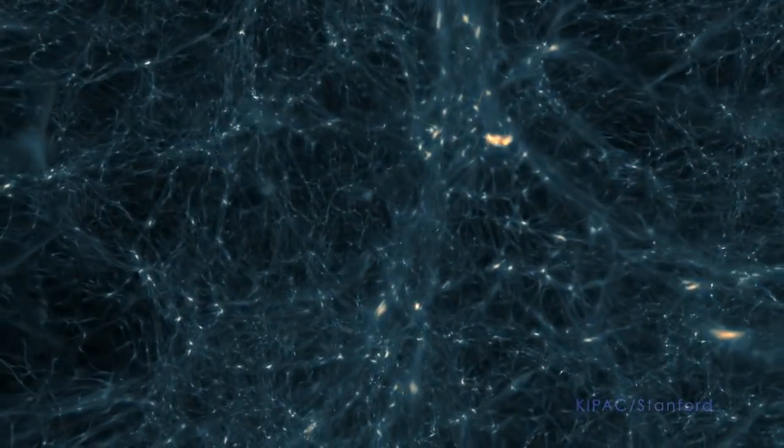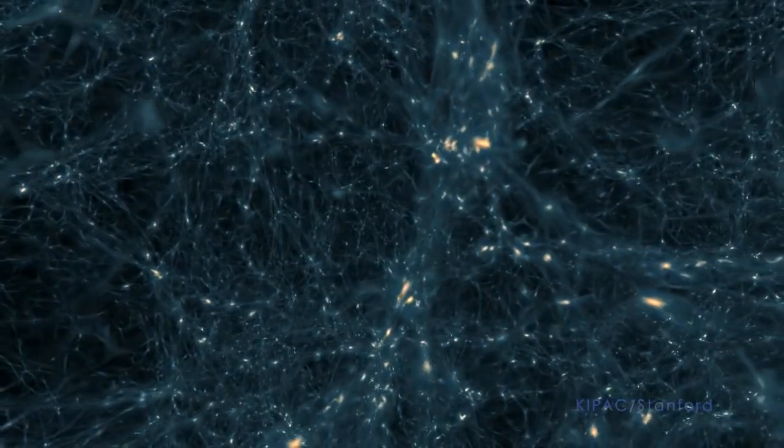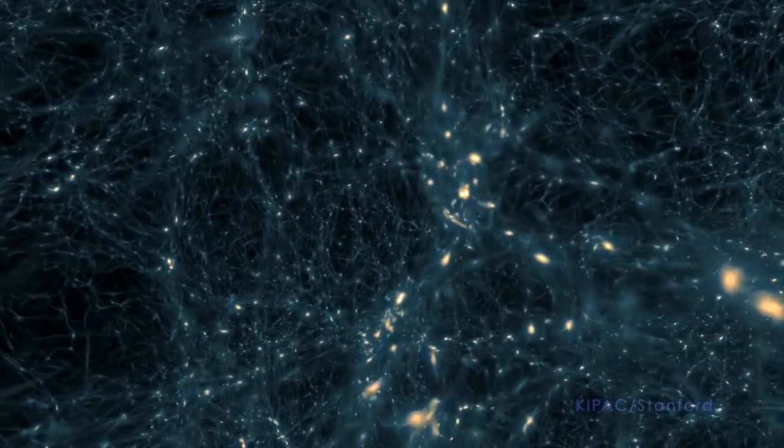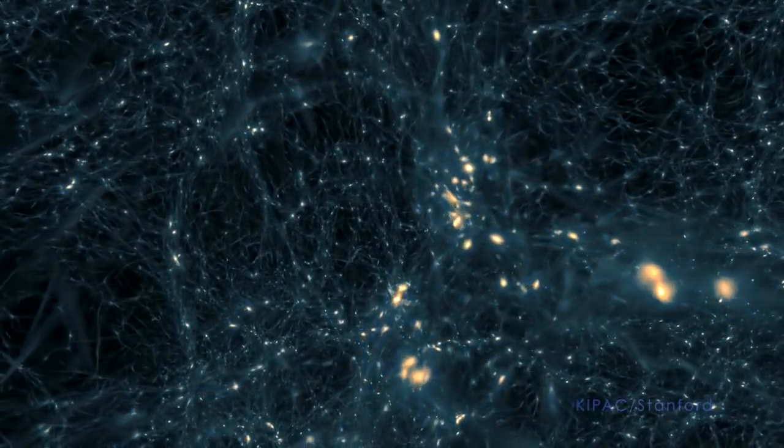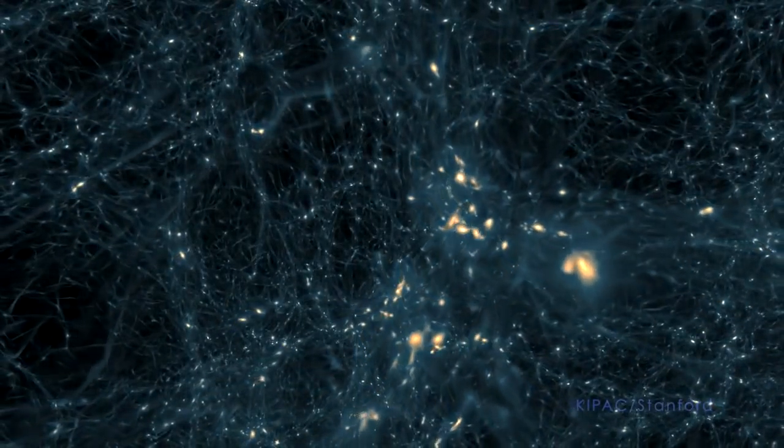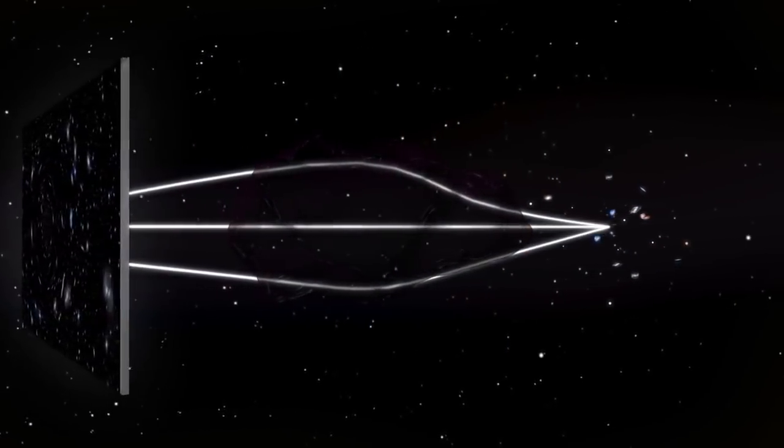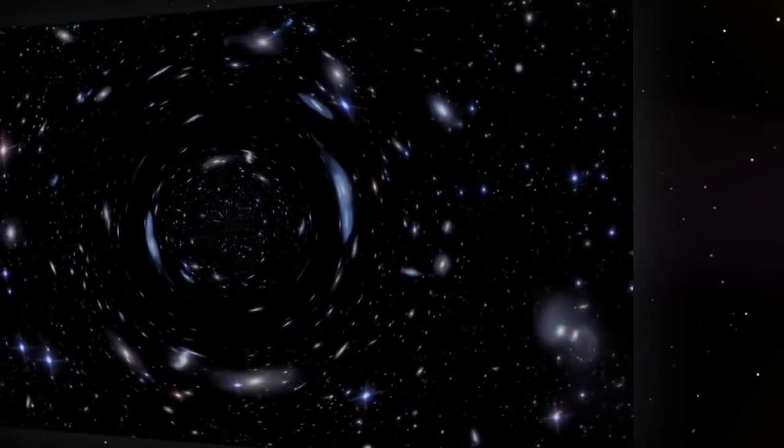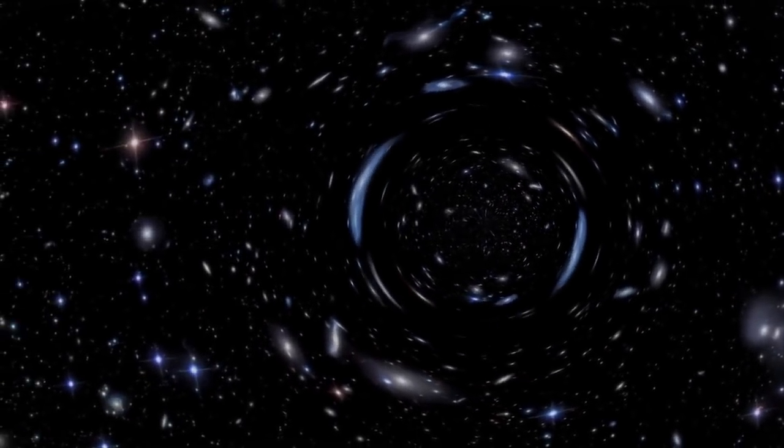Another mysterious component of the universe WFIRST will study is dark matter. Dark matter accounts for 27% of the cosmos, five times as much as the matter we can see, but has remained invisible to us. We can detect it by seeing how its gravity warps light from distant galaxies, a process called gravitational lensing.